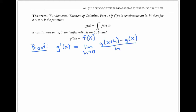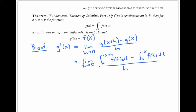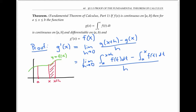Now g of x is defined as an integral from a to x. So g of x plus h is going to be the integral from a to x plus h, just plugging in x plus h for x of f of t dt, and g of x is the integral from a to x of f of t dt. By properties of integrals, the integral from a to x plus h minus the integral from a to x is just the integral from x to x plus h.